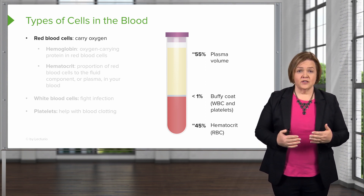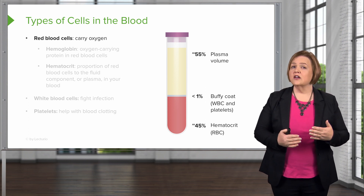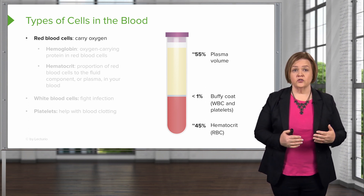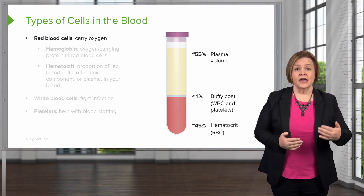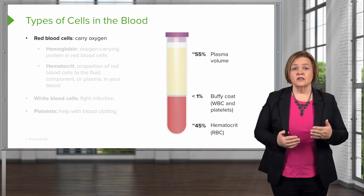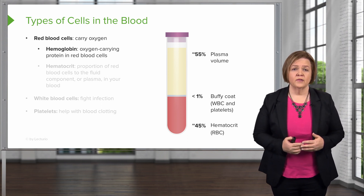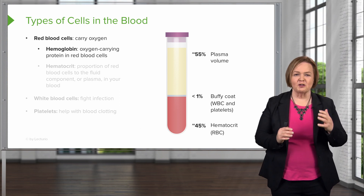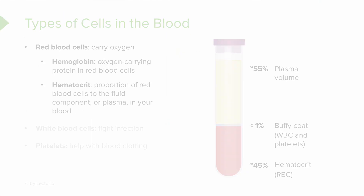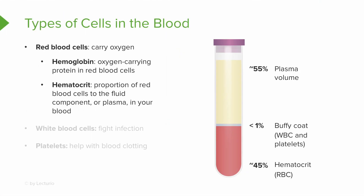The job of the red blood cells is to carry oxygen. That's why we want to look closely at another value on a CBC — the H and H, or the hemoglobin and hematocrit. Hemoglobin is the oxygen-carrying protein in the red blood cells. Adults have four of those in each red blood cell; babies have six — when they're first born they've got extra hemoglobin-carrying capabilities. The hematocrit tells us the proportion of red blood cells to the fluid component, or the plasma, in your blood. So if I have somebody who is bleeding out, their H and H will go lower. If a patient has experienced trauma and lost a lot of blood, that H and H will be lower than normal.